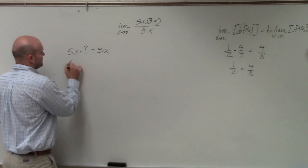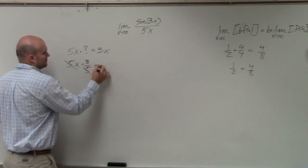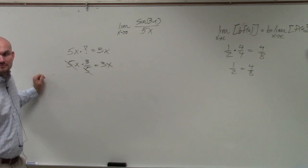Because if we multiply 5x times 3 over 5, the 5s divide out, right?